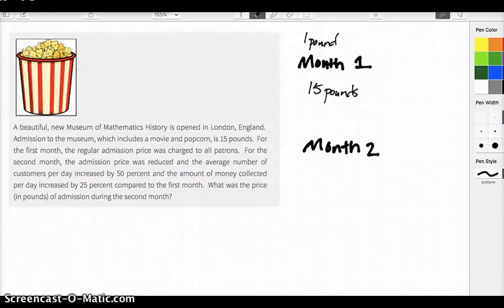So these people pay 15 pounds to get in. That was fine. And then the next month, what we know is that the price or the cost to get in to get a ticket was less than 15, right? Let's call that, I don't know, X. So X is the cost to get in. It was less than 15 pounds.